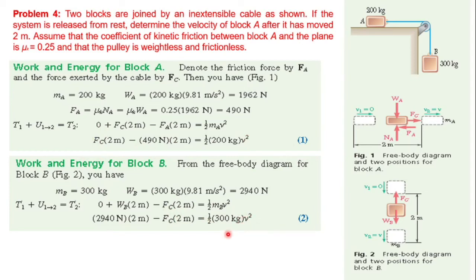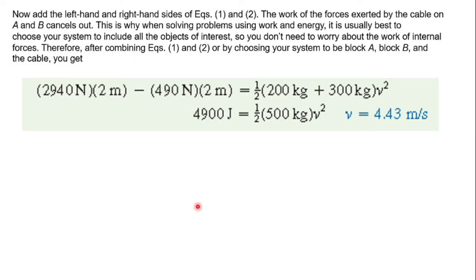Now we have two unknowns: velocity V and force Fc. We have two equations. We can solve by adding equation 1 and equation 2. When we add them, Fc cancels out and we can calculate the velocity V.